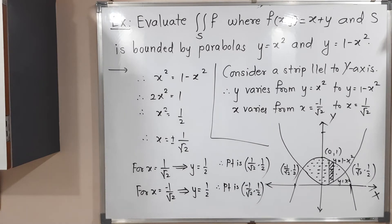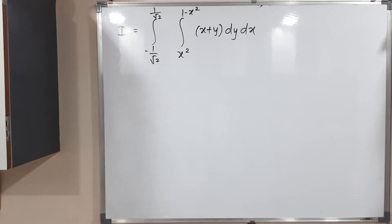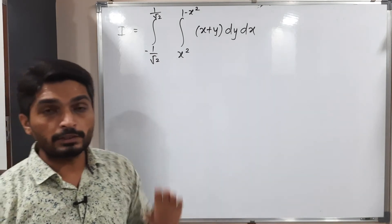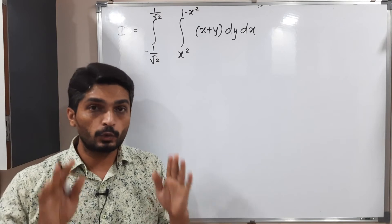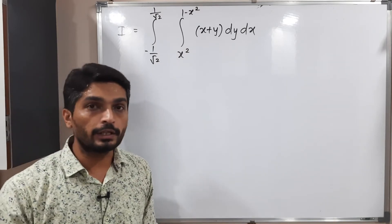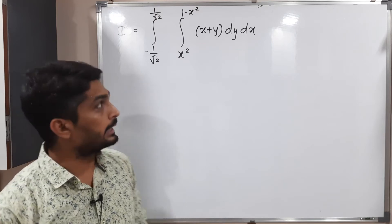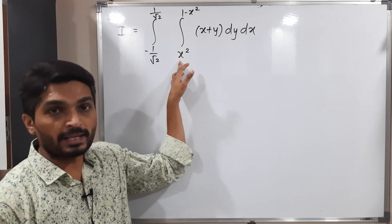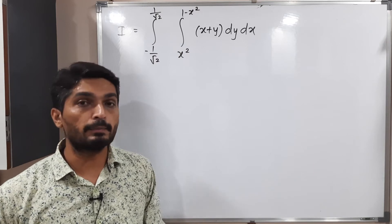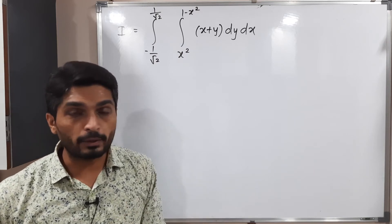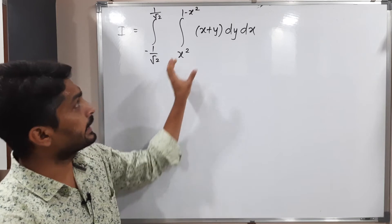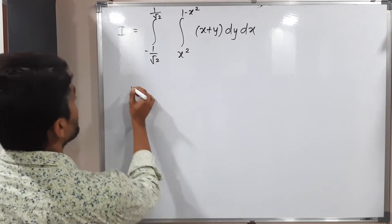The strip was parallel to the y-axis, so inner integration is with respect to y and outer integration with respect to x. Limits of y are from x² to 1 − x², and limits of x are from −1/√2 to 1/√2. Let us solve the inner integration first.